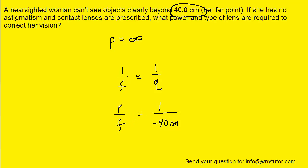So now we have one over focal length equaling one over negative 40. If we invert both sides of this equation, we would see that the focal length indeed is also negative 40 centimeters.